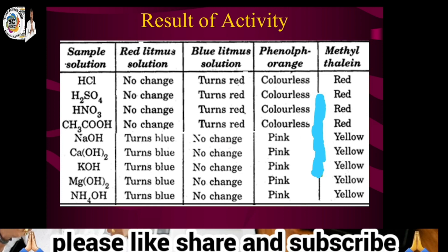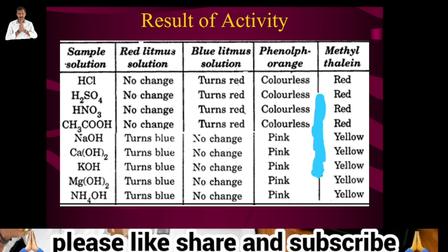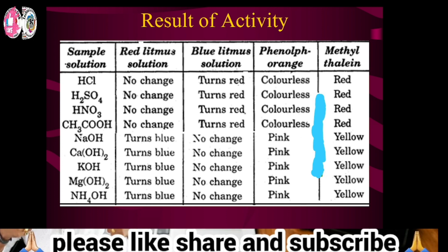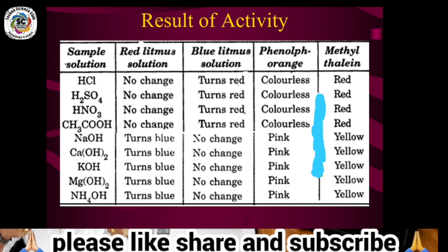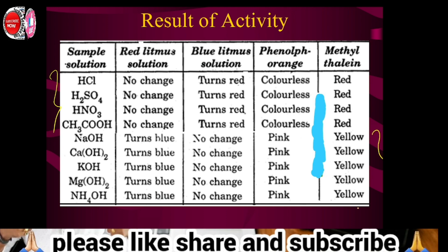For acids like HCl, H2SO4, and acetic acid (CH3COOH), blue litmus paper turns red and methyl orange solution also turns red — these confirm the first four substances are acids.